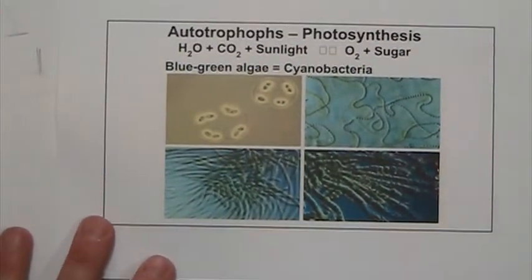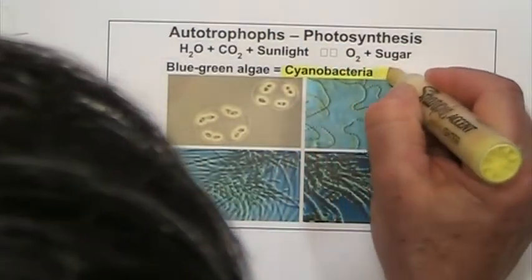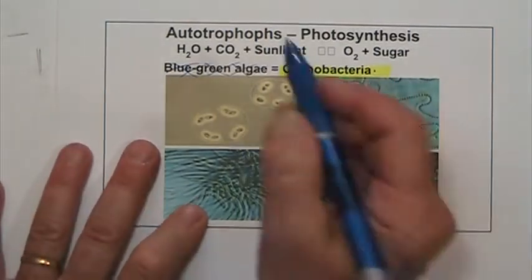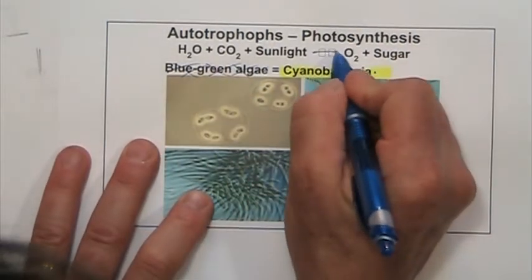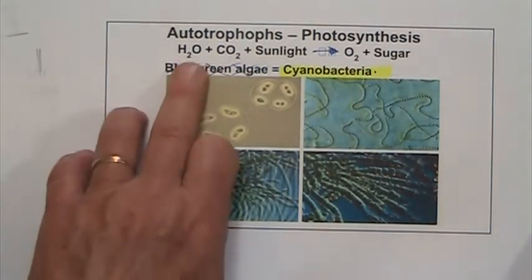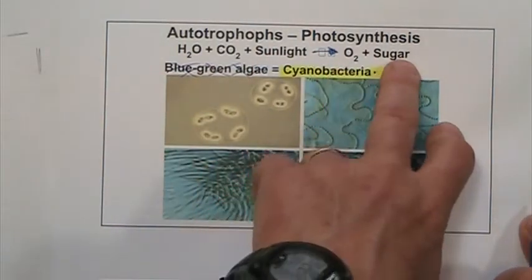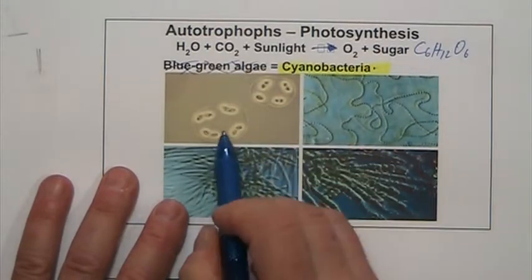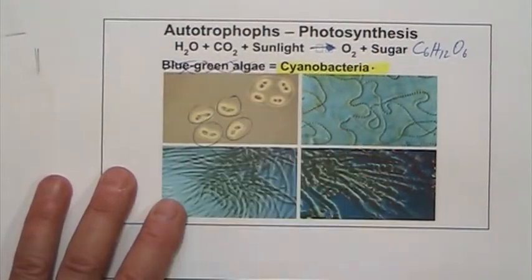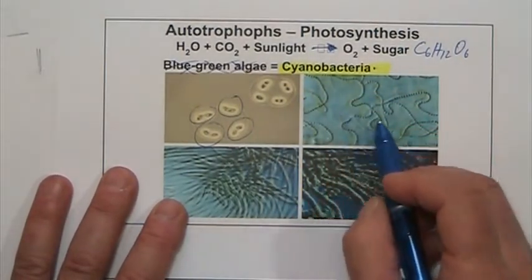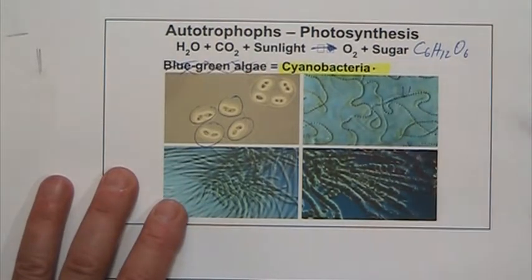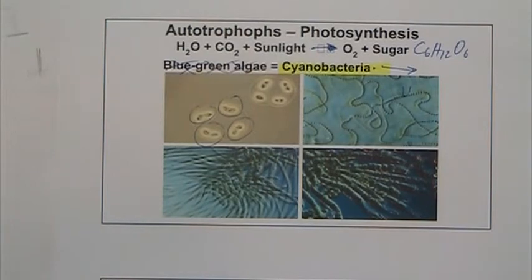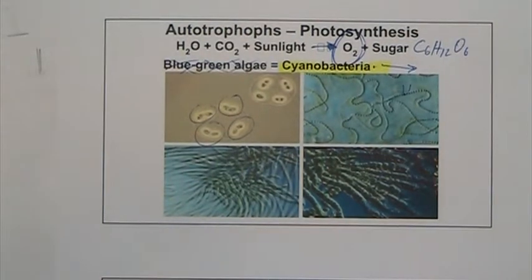Autotrophic bacteria include cyanobacteria — also called blue-green algae, though cyanobacteria is the preferred name. These are bacteria that can do photosynthesis: you need water, CO2, and sunlight, and in the process you produce oxygen and glucose. Remember, these were the first cells on planet Earth to do photosynthesis, and they are the ones that created the oxygen that is now in our atmosphere.